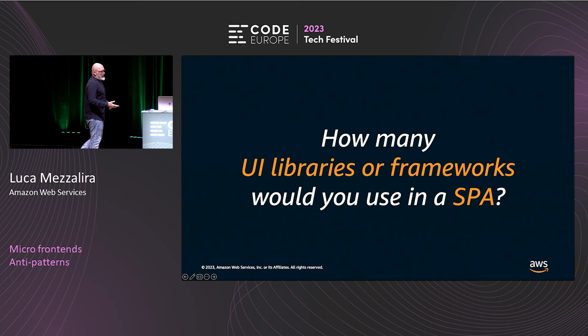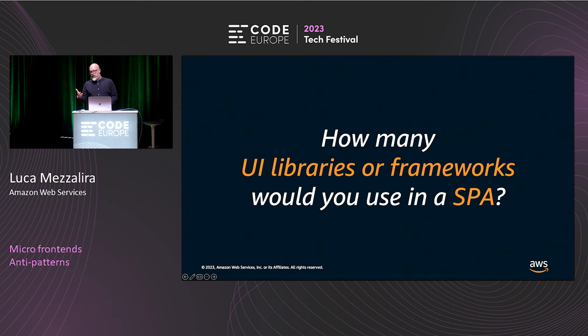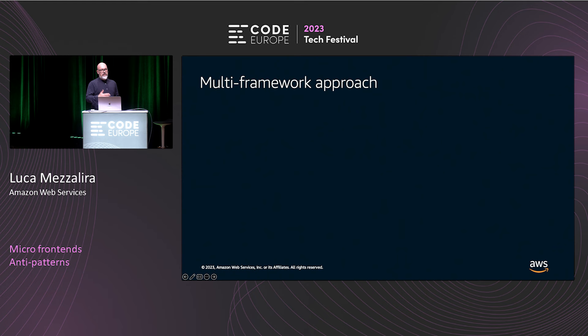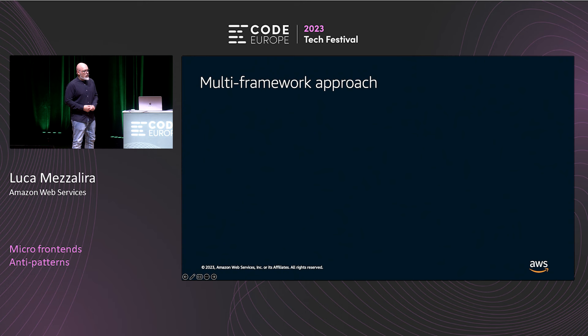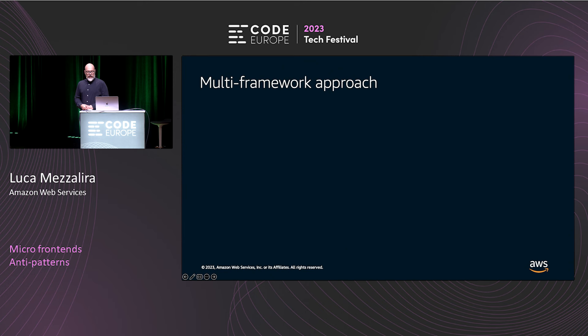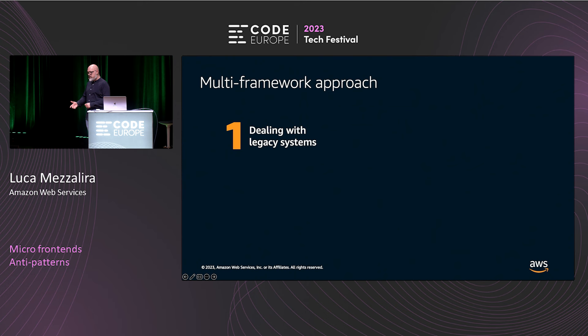Having multiple UI libraries and frameworks penalizes certain kinds of users. Technically you can do that with a single-page application, but we know we want to optimize for networking. There are certain countries where the infrastructure isn't as great, and mobile internet connection may not be what you expect. You want to provide a snappy experience to your users — therefore, performance matters. There are situations where this capability can really help you, though — for instance, when dealing with a legacy system.